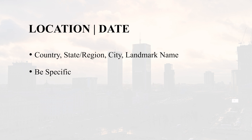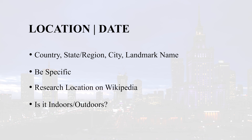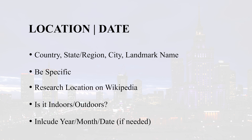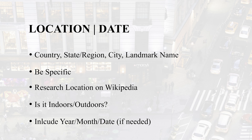Quite often we research the location of a photo or video on Wikipedia to find additional keywords. If it is indoors, include the keywords indoors and interior. If the photo is taken outdoors, use keywords outside and outdoors. Also, under certain circumstances, specifying the year, month, or even date could be very important — for example, the date of a particular march or protest.